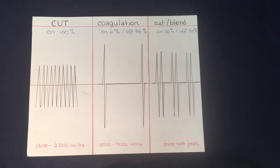Now you have the coagulation, and the coagulation is about three times what the cut is, of course depending on what settings a surgeon has it set to. But the coagulation is going to go from 3500 to 9000 volts and it's going to be on only about 6% of the time. 94% of the time it's going to be off.